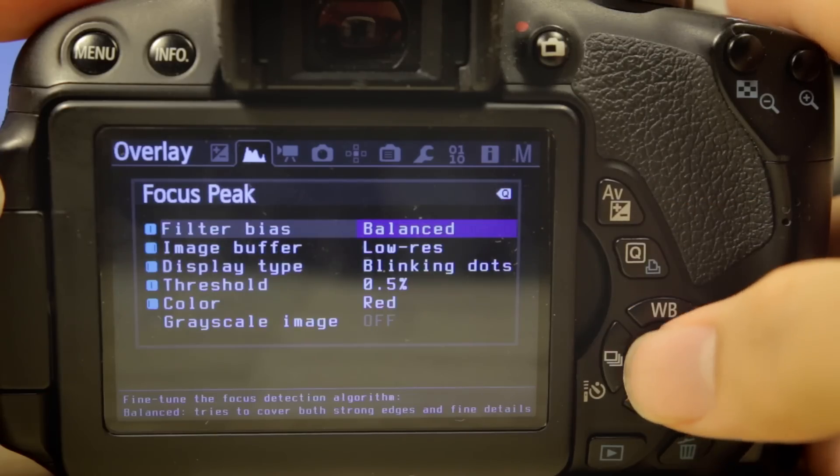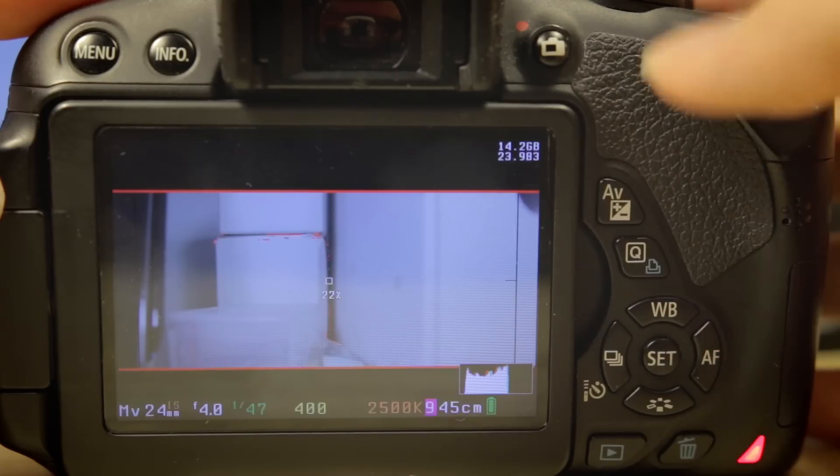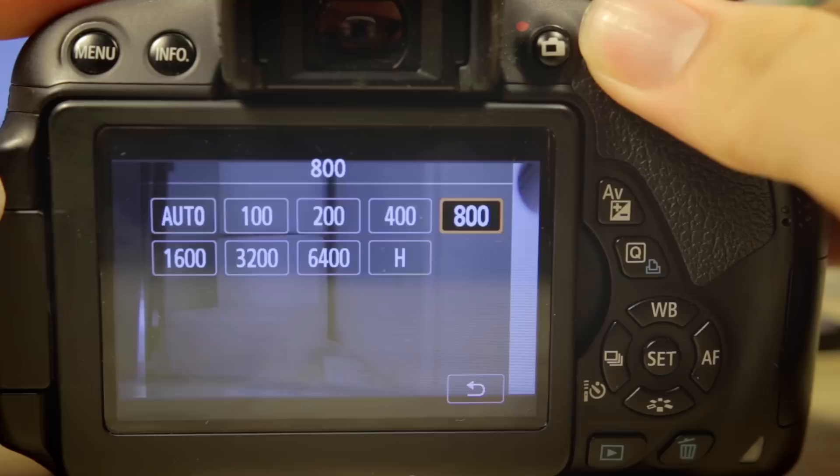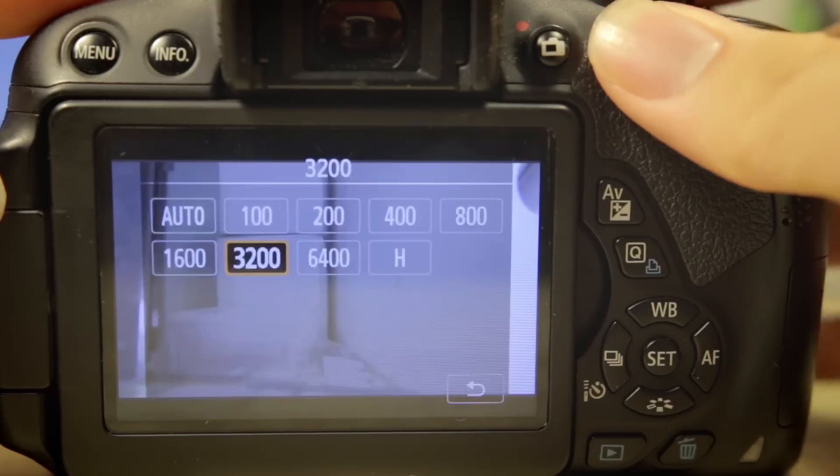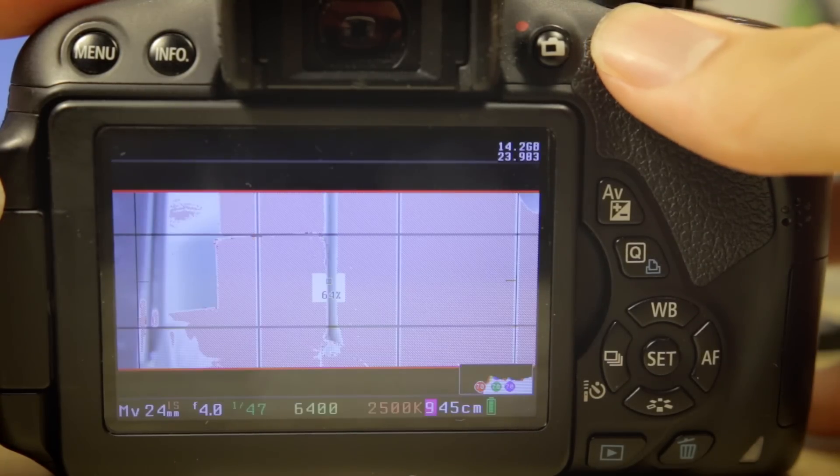You have Zebra Stripes so you can see your overexposed areas and you also have Focus Peeking, which is a huge lifesaver when you are doing manual focus, which is a really great feature to have.